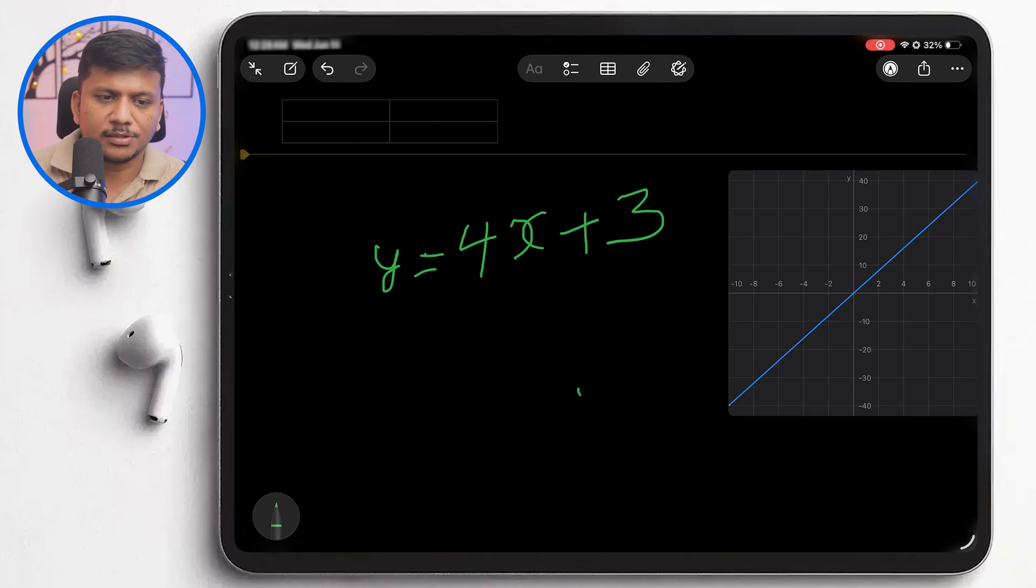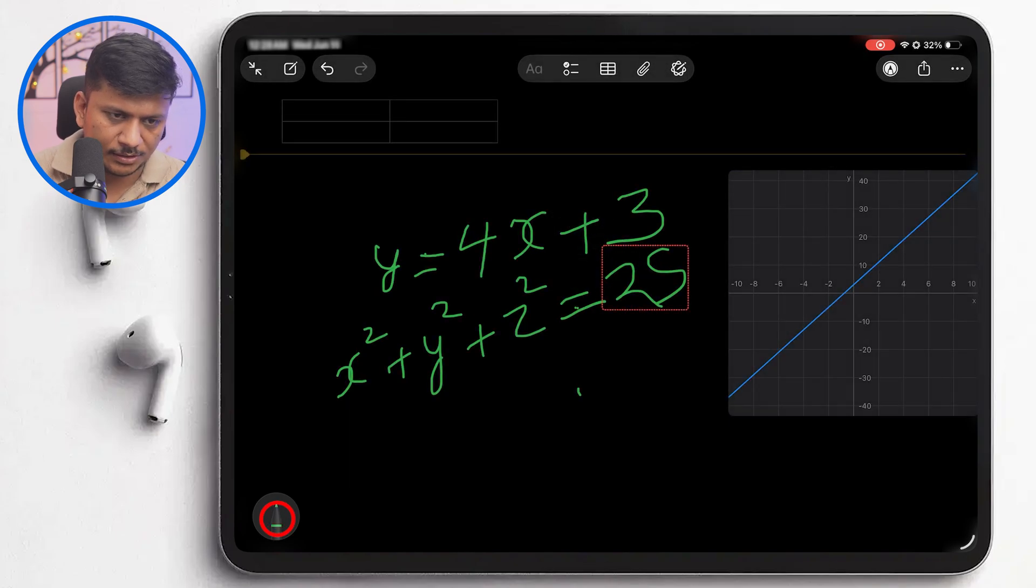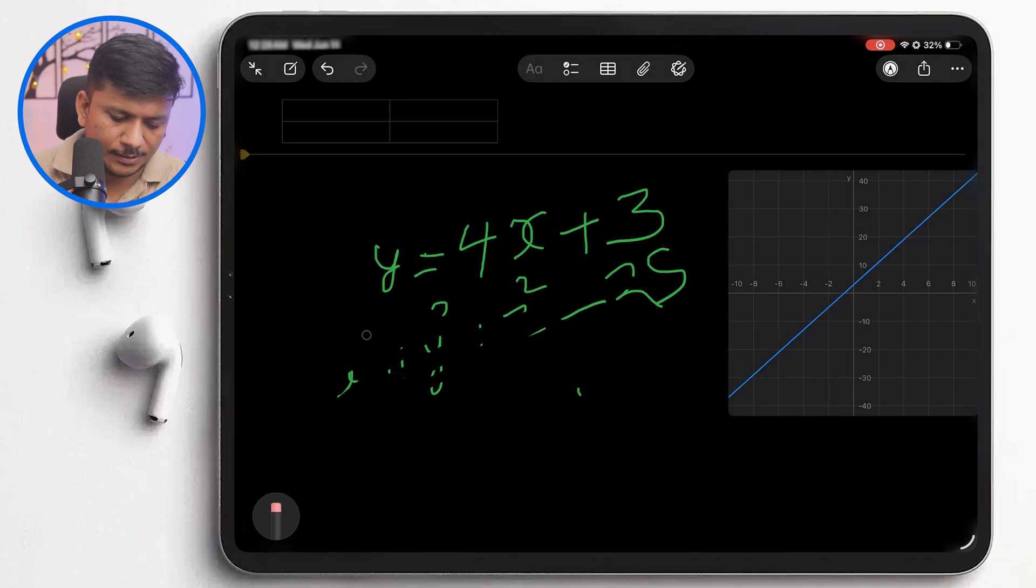Now let's write a 3D equation. Let me put an equation of a sphere: x² + y² + z² = 25. Can I plot this? As we know, there's always a specific way we need to write equations here, and this is not the format that suits the graph.